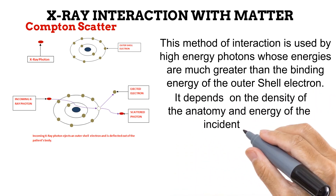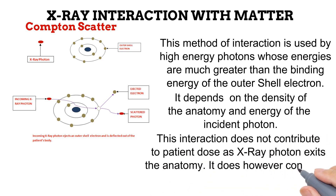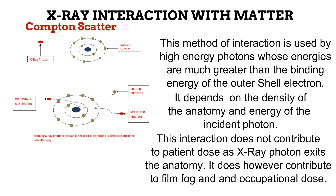The chance of this interaction occurring is dependent on the density of the patient's anatomy and the energy of the incoming photon. This means it will occur more commonly in thicker anatomy and with high energy photons. Because the X-ray photon leaves the patient's body, Compton scatter interactions do not contribute to the dose of radiation that the patient receives.